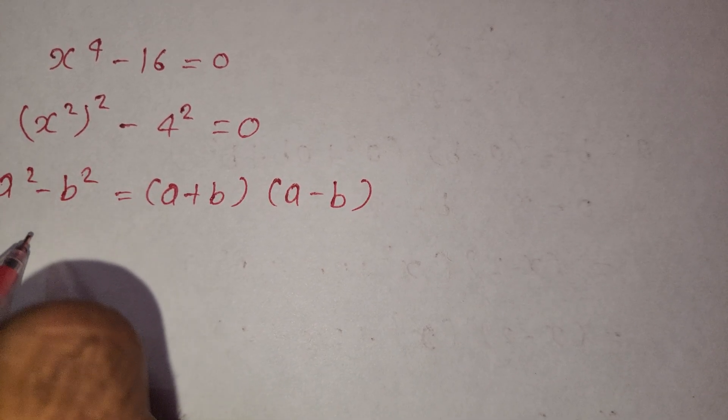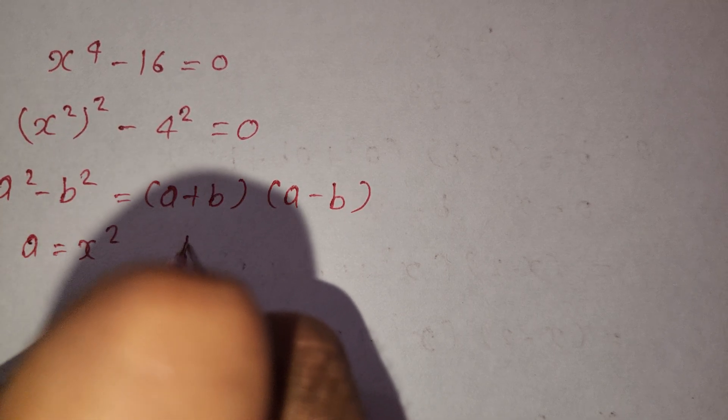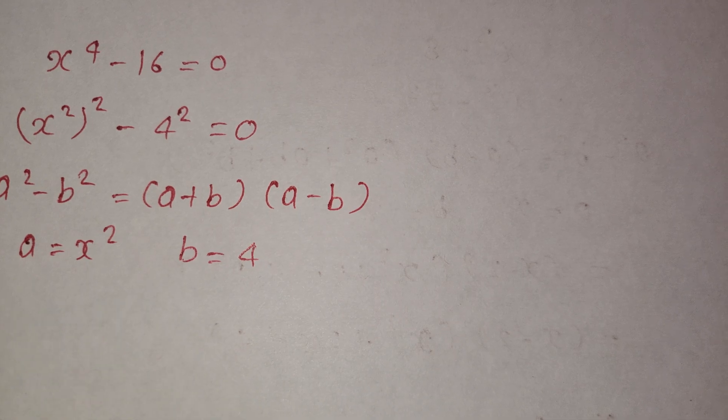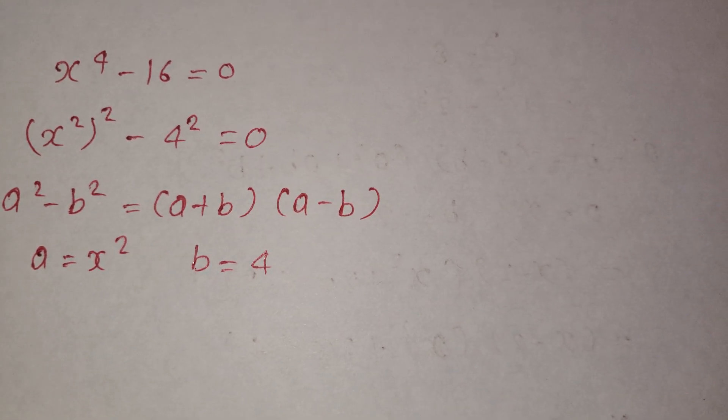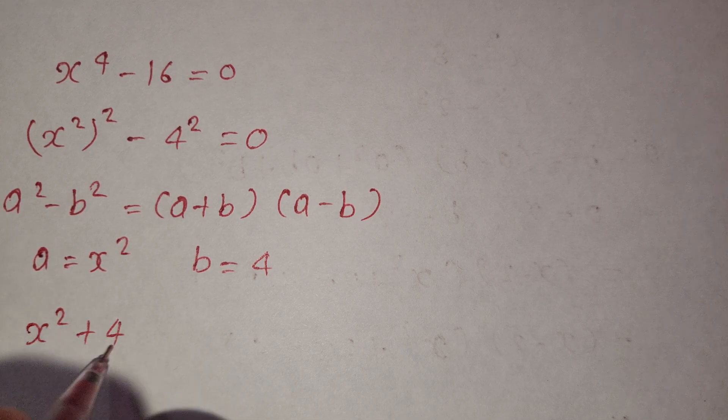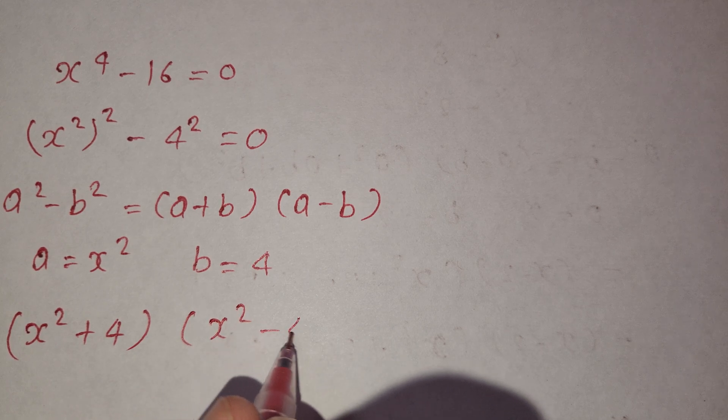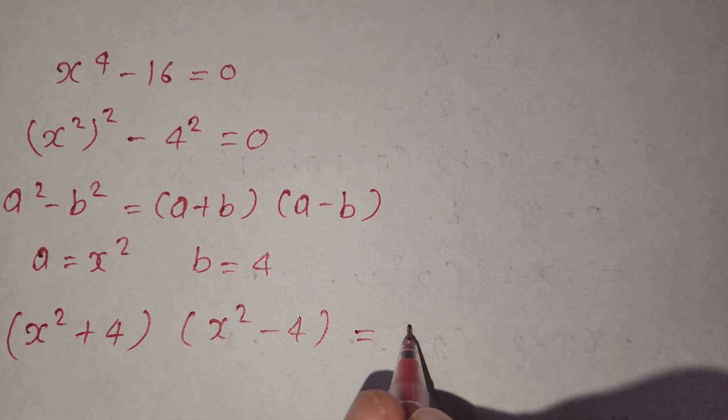Where a is equal to x square and b is equal to 4. Now we write x square plus 4 and x square minus 4 is equal to 0.